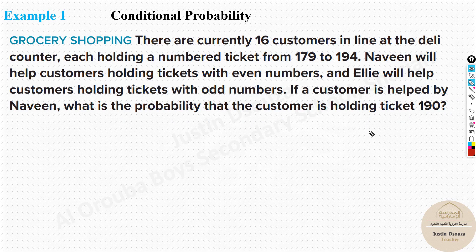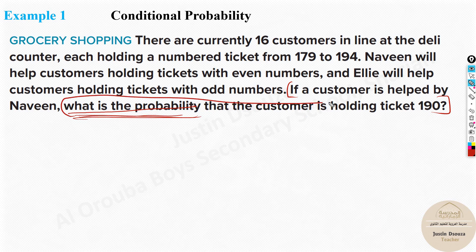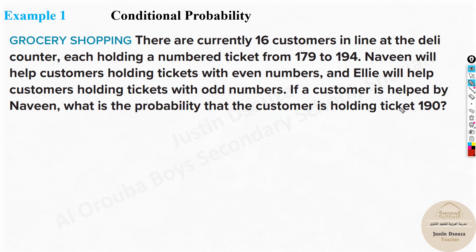Before solving, it is very important to identify which statement is the condition. Read carefully: 'What is the probability that the customer is holding ticket 190?' Whatever comes after 'what is the probability' is not the condition — that is what you are trying to find; that is event B. The condition A is the other statement: 'If a customer is helped by Naveen' — this is what has already happened. So always look for the phrase 'what is the probability' — the other statement will be condition A.